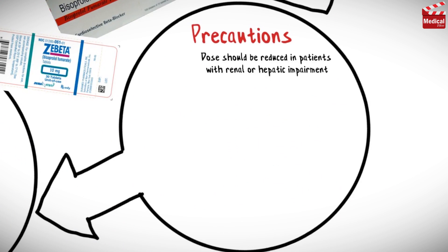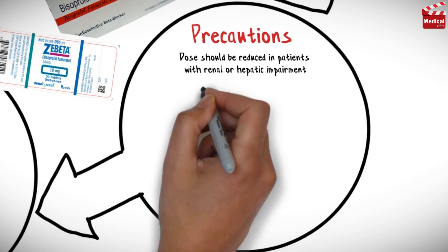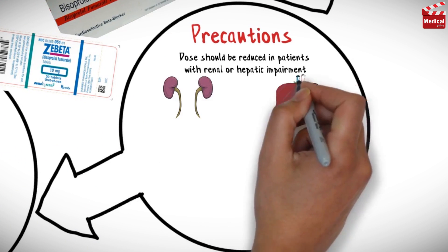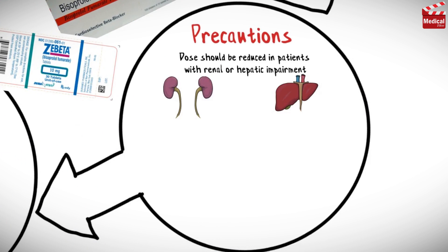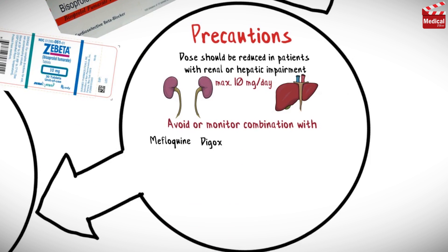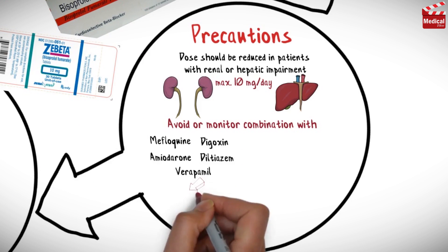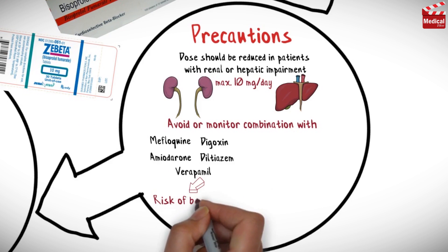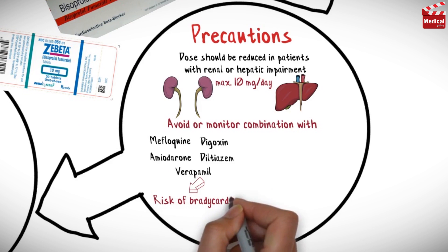Dose should be reduced in patients with renal or hepatic impairment, with a maximum of 10 milligrams per day. Avoid or monitor combination with mefloquine, digoxin, amiodarone, diltiazem, and verapamil, because of risk of bradycardia.